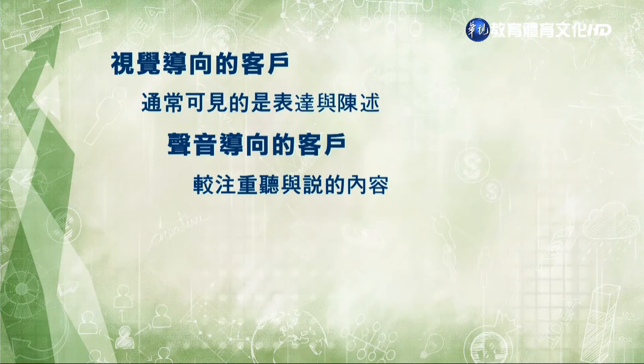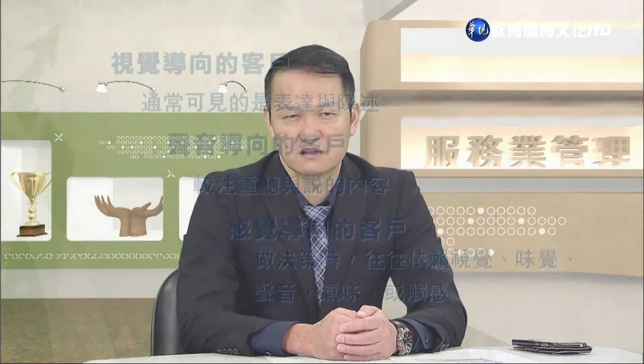透過觀察跟傾聽，我們可以瞭解顧客是何種特質，是視覺導向、聲音導向還是感覺導向。視覺導向顧客通常可見表達與陳述，例如常有關於手機外型設計、網頁畫面顏色配置的評論，在介紹產品時要讓他們看到實際產品或照片並示範操作。聲音導向的客戶比較注重說的內容，透過交談討論他們的需求與欲望，提供產品操作資訊讓他們對產品有更多認識。感覺導向的顧客在做決策時往往依賴視覺、味覺、聽覺、氣味或觸覺，可能會去聞、去聽、去試、去吃、去觸摸。感覺導向的人喜歡以嘗試方式選購產品，如果給他們嘗試或體驗產品的機會，通常會比較滿意。